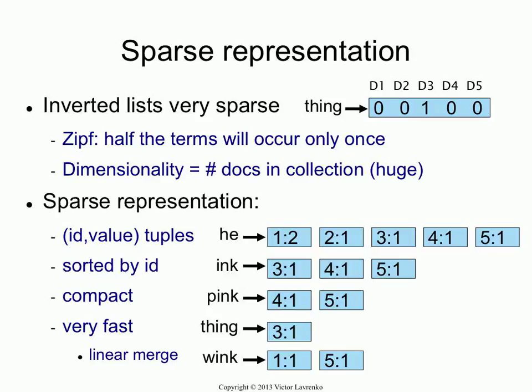What you want to do instead is have a sparse representation for the entries in the index. Instead of storing a full vector with zeros and non-zeros, you store tuples which store the document ID together with the value. In this case, the value is just the frequency, so we store document ID together with the frequency. So the word 'thing' becomes 3:1 — it occurs once in document 3 and doesn't occur anywhere else.